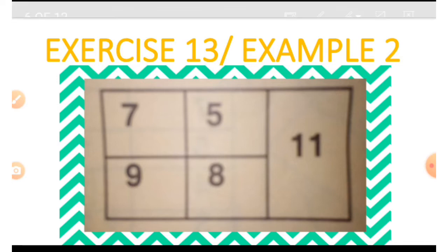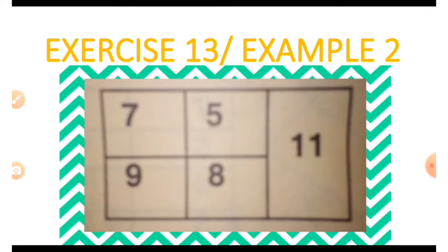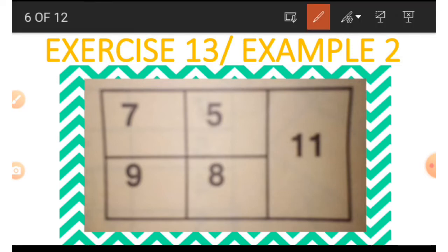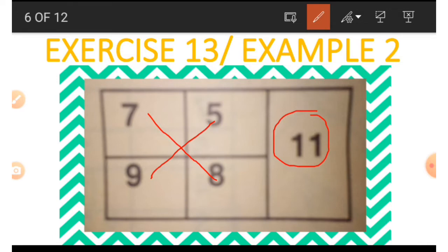The four numbers in the four boxes must be used to get the one number in the large rectangle. Take note: the 7 and the 8 are connected, and the 9 and 5 are connected, to get the 11.